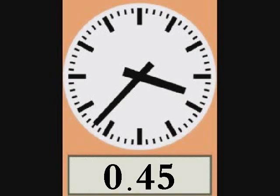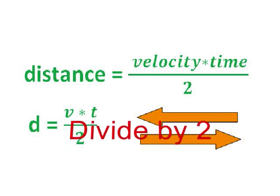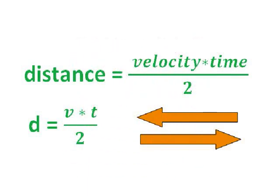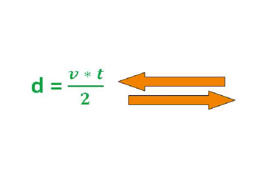Their timing device reports that the total travel time is 0.45 seconds, but they only want to measure the reflective time, so they divide their total travel time by 2. Going back to the formula, capital D equals v times t, they now must account for the two-way travel time, so our formula will read: small d equals v times t divided by 2.